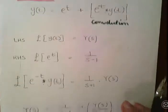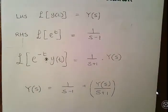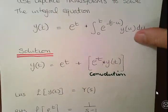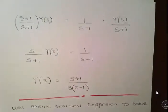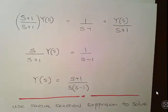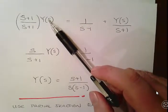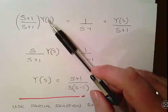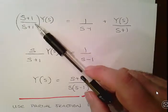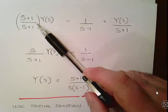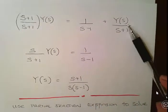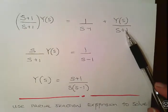Essentially when we piece our equation together, this is what we get. y of s equals 1 over s minus 1 plus y of s over s plus 1. Essentially what we have to do is get an expression in terms of y of s, and then get the inverse Laplace transform of that. I'm going to try and get y of s all onto one side. I'm going to multiply above and below by s plus 1 to get a common denominator.